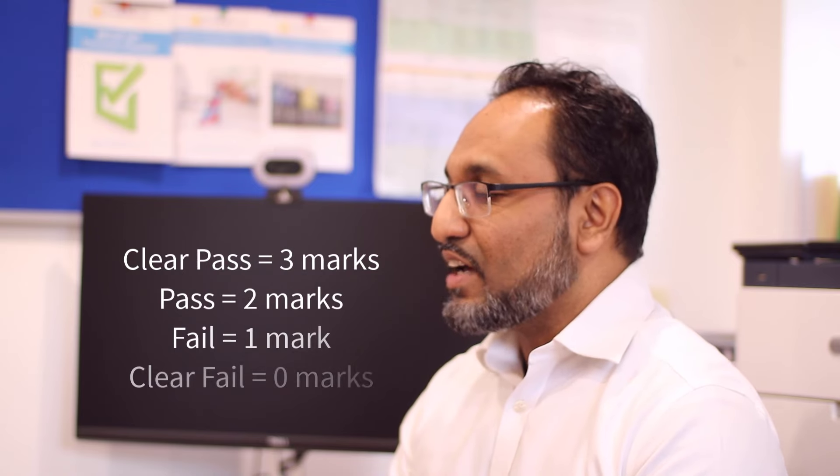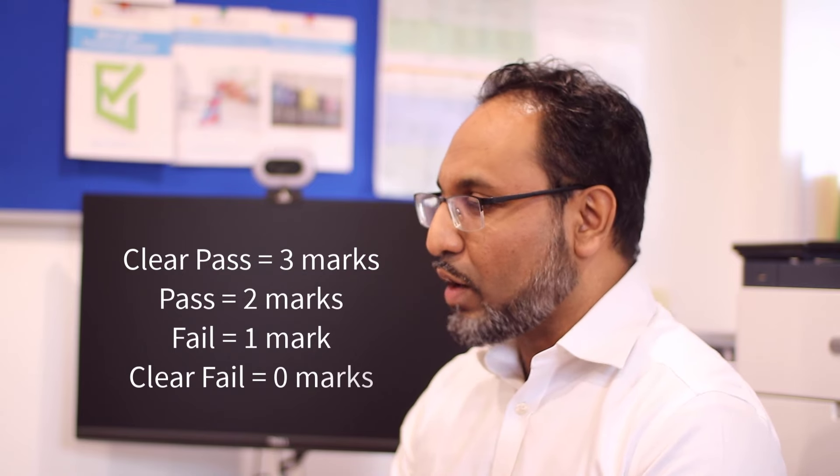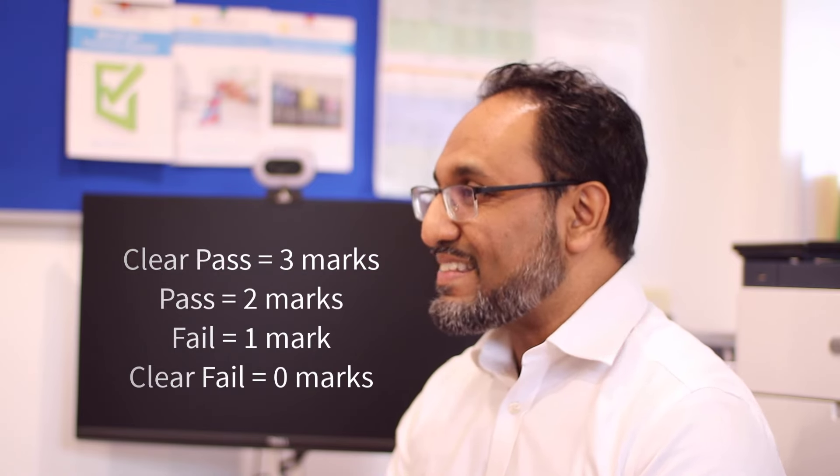In terms of the marks: a clear pass is worth three marks, a pass is two marks, a fail is one mark, and a clear fail is zero marks. So the maximum raw score for any given case, if you were to get clear pass, clear pass, clear pass, is nine.